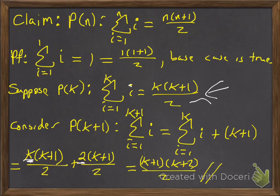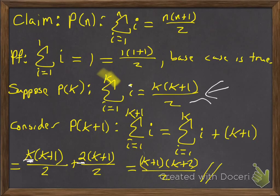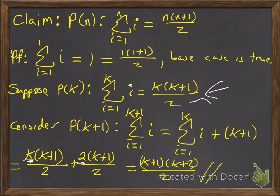For the k plus 1 case, if we go back and look at the formula — here's the k, so if it's going to be k+1, I should have a k+1 there, which I do. And where I had k, I should have k+1; where I had k+1, I should have k+2. In fact, I do have that. So this shows that this summation formula is true for all positive integers.